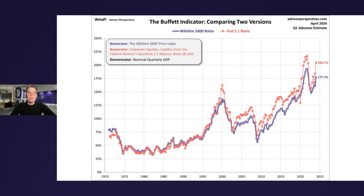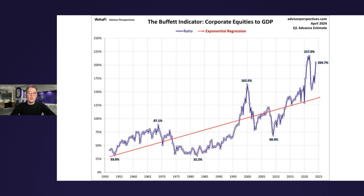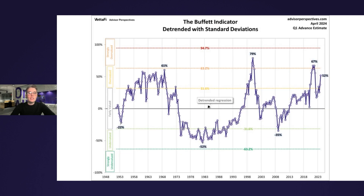Now for a better sense of valuation over time, let's detrend the data by drawing a regression through the series and eliminating that upward trend. Here we've drawn a regression through the series, and we can see whether we're above or below the regression and make rough estimates of about how far. Taking it a step further, we add standard deviations to the detrended regression. Now we can tell the exact percentage above or below the regression trend line we are, which then helps tell us if the stock market is undervalued, fairly valued, or overvalued. The current Buffett Indicator value of 204.7% is 52% above the detrended regression, aka 1.6 standard deviations above its historical trend line. Therefore, the market currently falls into overvalued territory.